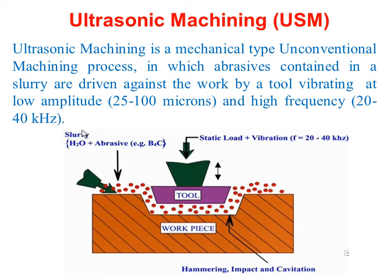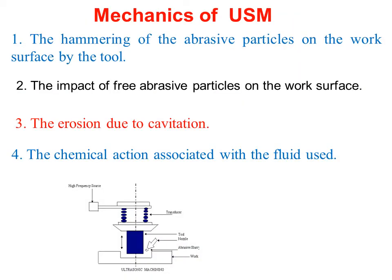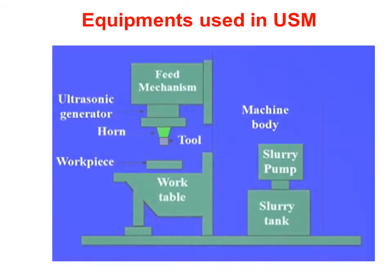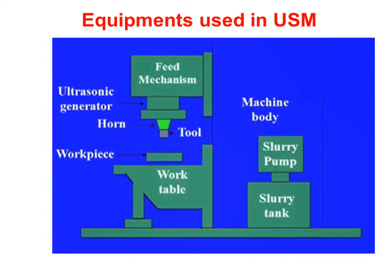Mechanical erosion takes place due to hammering impact and cavitation effect. The mechanics of USM include: the hammering of the abrasive particles on the work surface by the tool, the impact of free abrasive particles on the work surface, the erosion due to cavitation, and the chemical action associated with the fluid used.